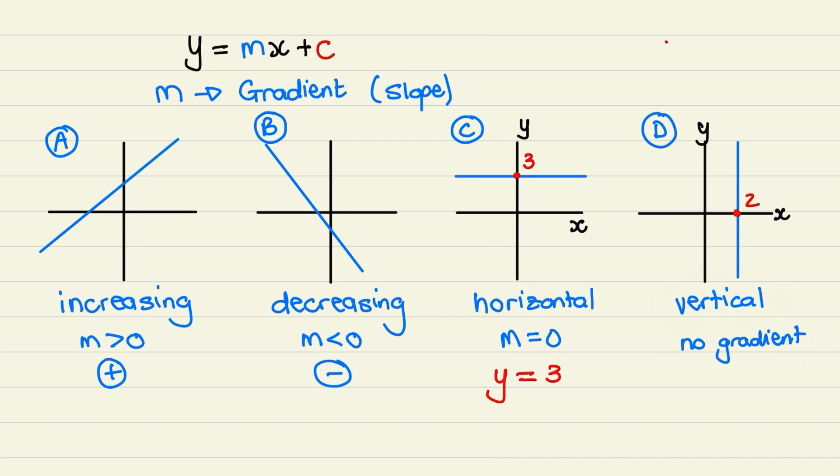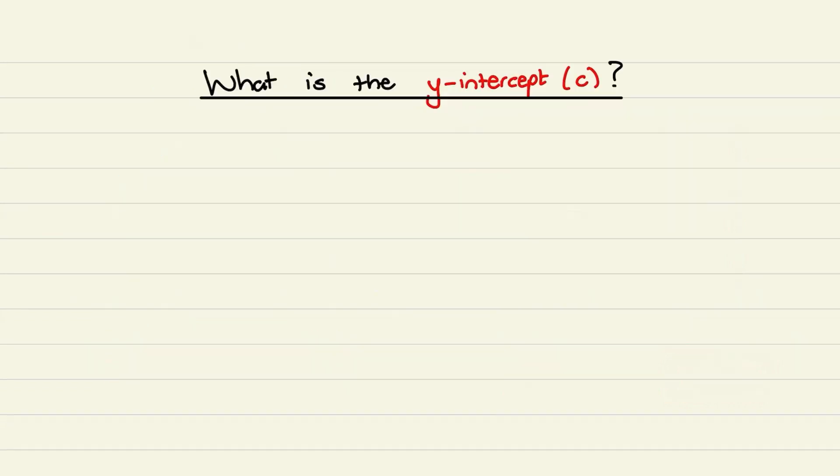And let's say for example that that line passes through x equal to 2. That means everywhere on this line, x would be equal to 2. So the equation of this line is x equals 2. Let us discuss what is the y intercept.